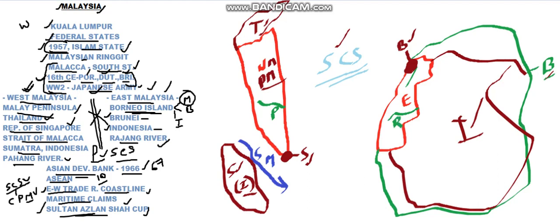The capital of Malaysia, Kuala Lumpur, is present in western Malaysia. So this is a brief rough mapping of Malaysia — both the western side and eastern side. Thank you.